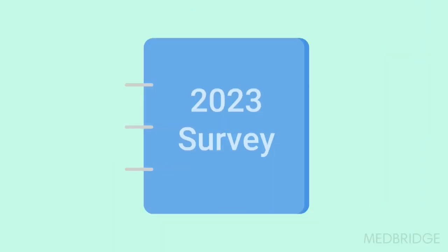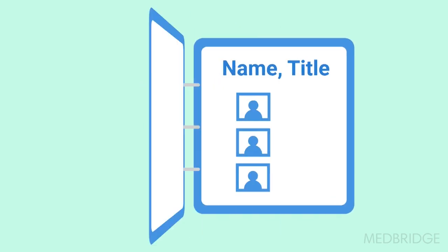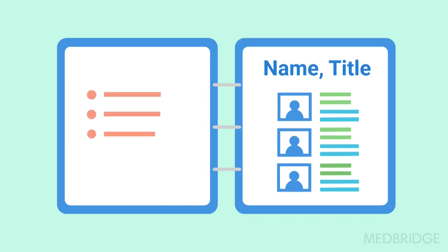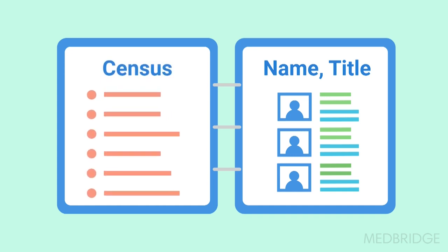Put this in your survey binder: a list of names and titles of key staff in your organizational structure, and your current active caseload or your census.